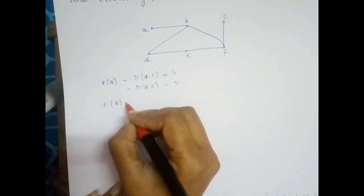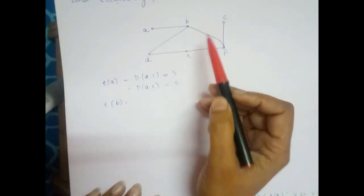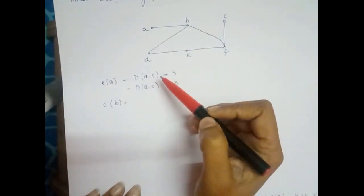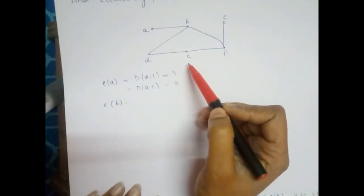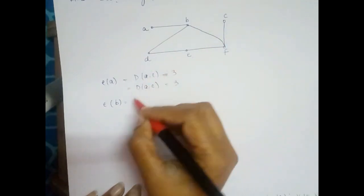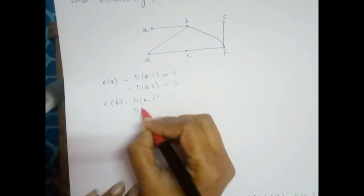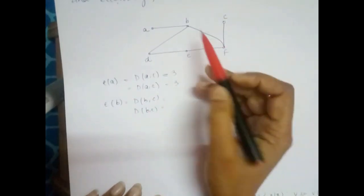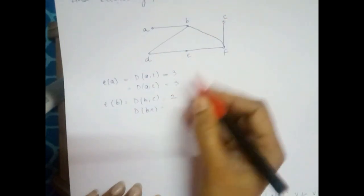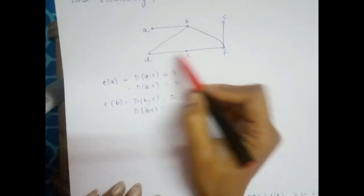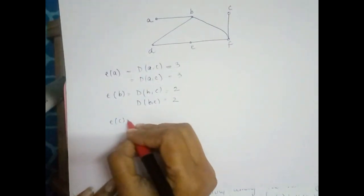Similarly, for eccentricity of vertex b, we find the farthest vertices, for example c and e. Distance b to c: b to f, f to c gives 2 edges. Distance b to e: b to d, d to e gives 2 edges. So the eccentricity of b is 2.